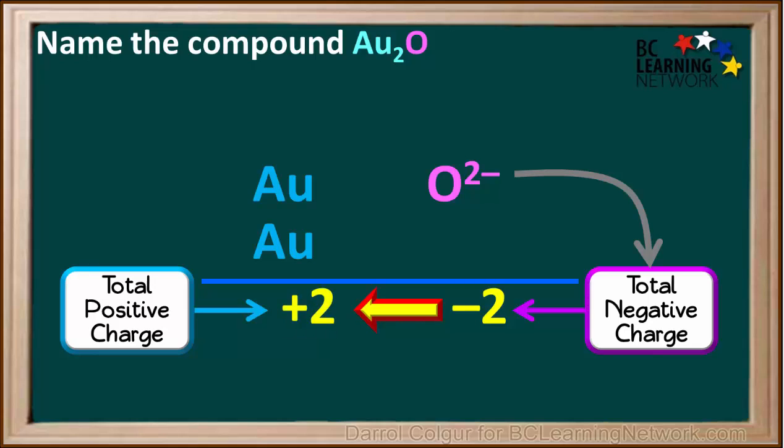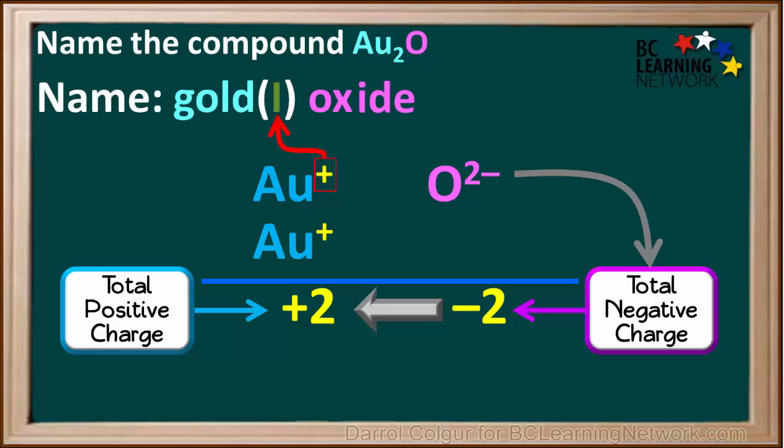Therefore the total positive charge must be positive 2. For the charges on two gold ions to add up to positive 2, each gold ion must have a charge of positive 1. So we insert the roman numeral 1 in the brackets.